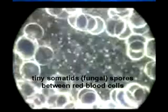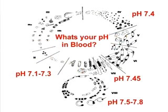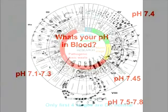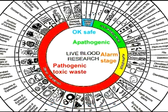The endobiont adapts itself to the changing environment, which can be seen through the microscope as a change in its shape and form. Another doctor, Dr. von Brehmer, called the somatids Sisyphonospora polymorpha, showing in this diagram how they change with the pH. Here we can see in Enderlein's Wheel about 42 different stages of the evolution of these forms. Only the first four stages are actually healthy or safe; the rest are starting to show stages of alarm or an incredible debris of toxic waste.